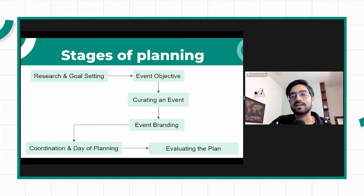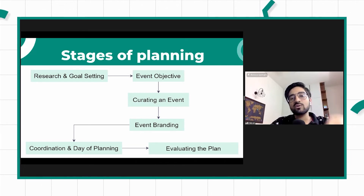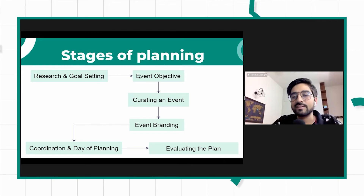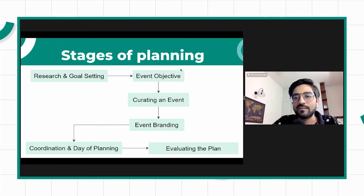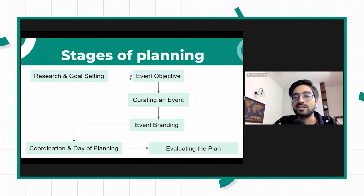These are some of the stages that generally work for any event. The first stage is research and goal setting — why you want to conduct an event and what you want to achieve from it on a broad company strategy perspective. For each event, there could be different objectives: whether the objective is to increase new member acquisition, or to increase engagement in the community. You should have tactical objectives for each event or at least each event format.